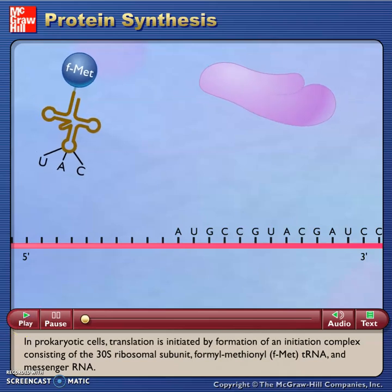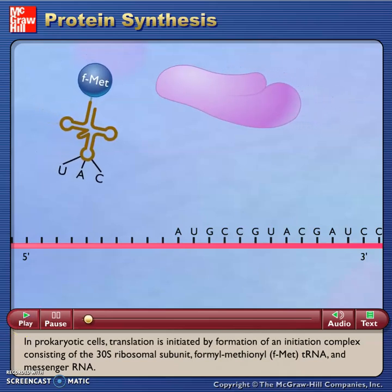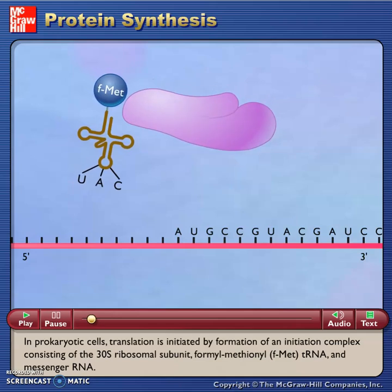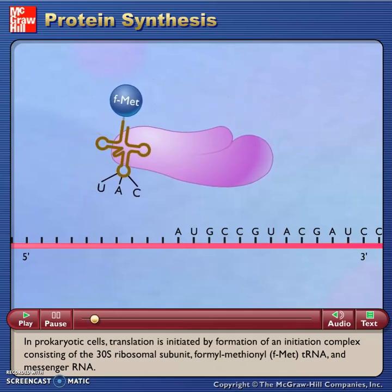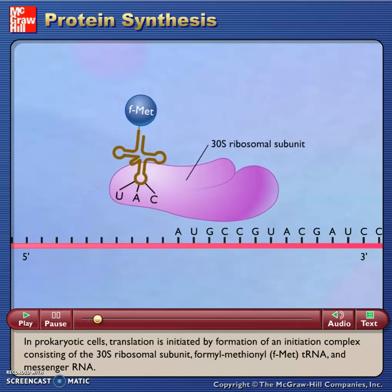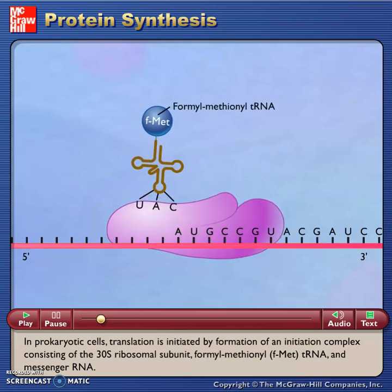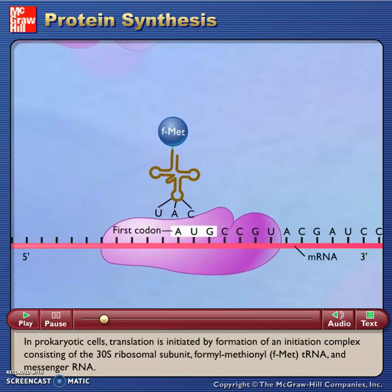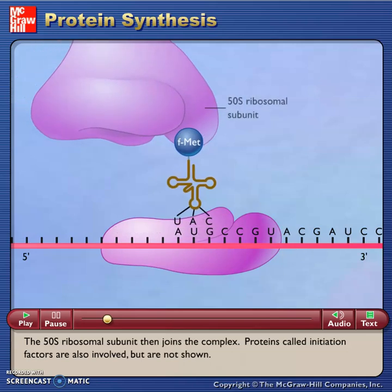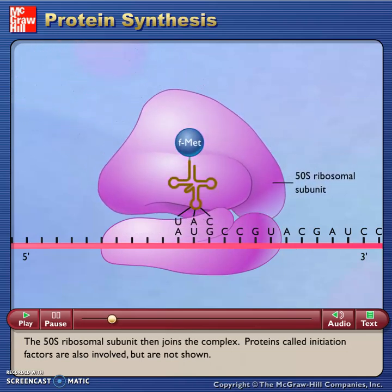In prokaryotic cells, translation is initiated by formation of an initiation complex consisting of the 30S ribosomal subunit, formyl methionyl tRNA, and messenger RNA. The 50S ribosomal subunit then joins the complex.